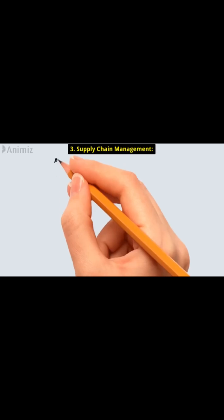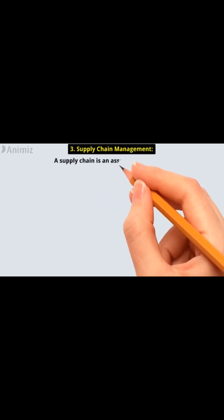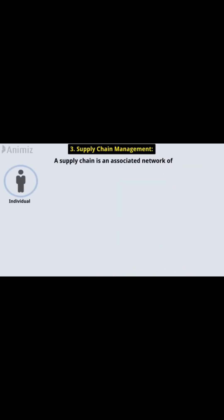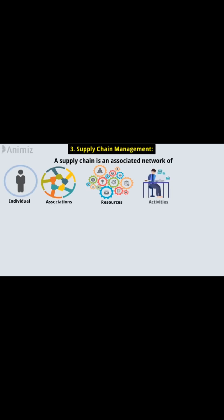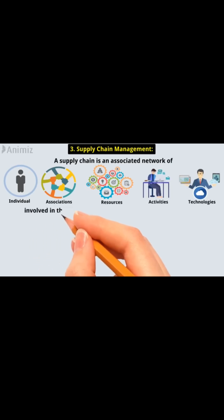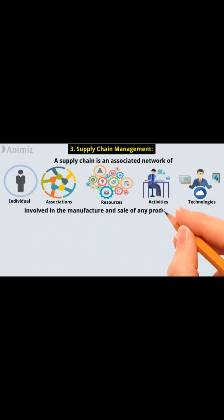3. Supply Chain Management. A supply chain is an associated network of individuals, associations, resources, activities, and technologies involved in the manufacture and sale of any product or service.